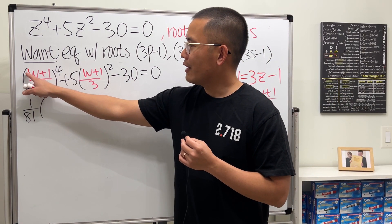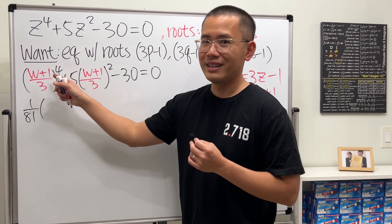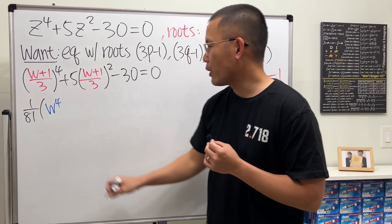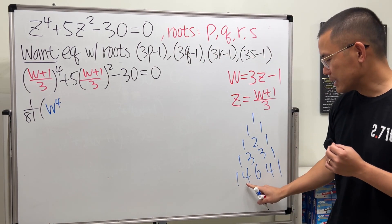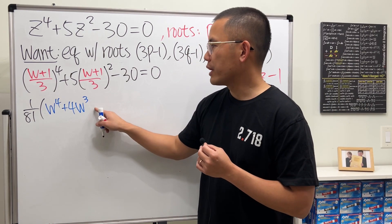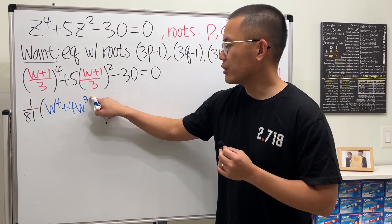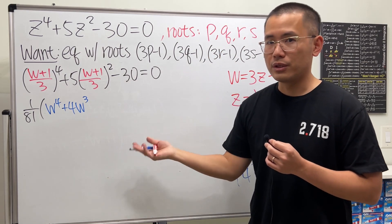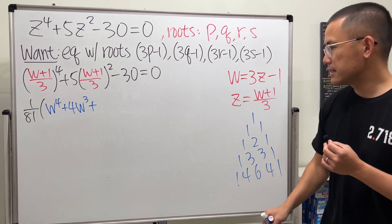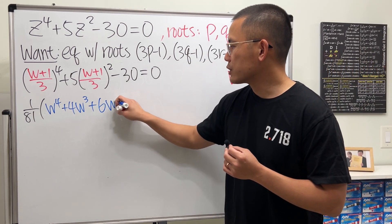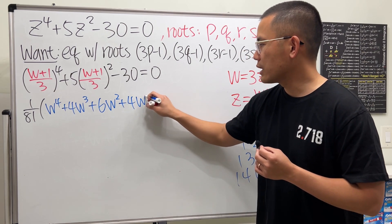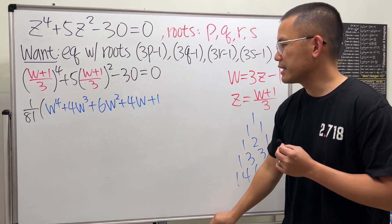And thankfully, they only have like 1w + 1. So all we have to do is 1w^4, and then plus 4w^3, and then right here, technically you put this to the 1st power, but 1 to the 1st power, it doesn't matter. So we can continue. The next one is plus 6w^2, and then times 1 to the 2nd power, but it doesn't matter, and then the rest, plus 4w, plus 1, just like that.